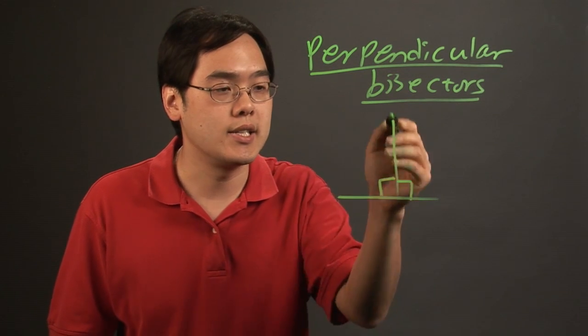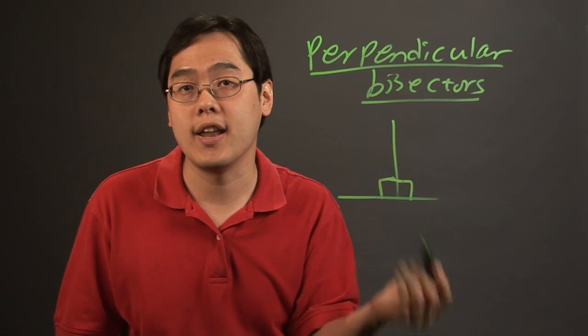So a perpendicular bisector is a line that cuts another line in half at a 90 degree angle.